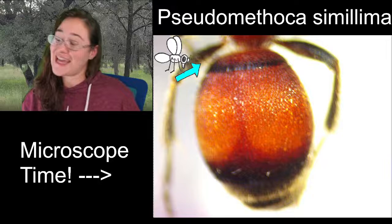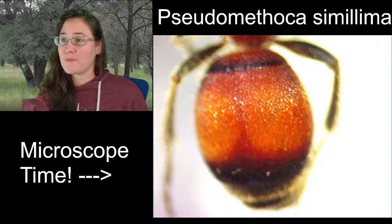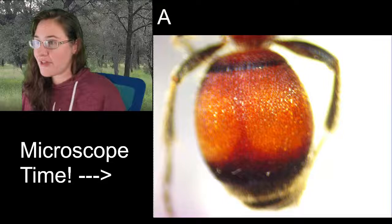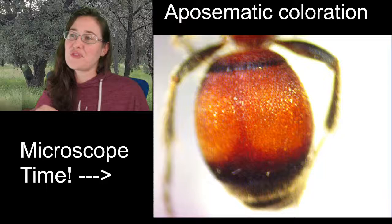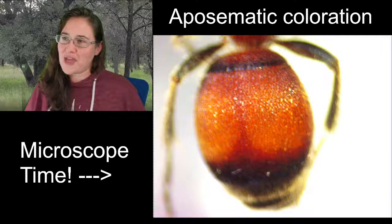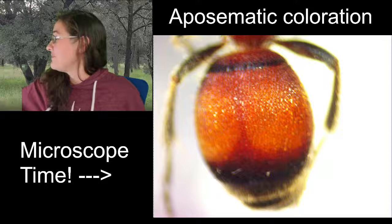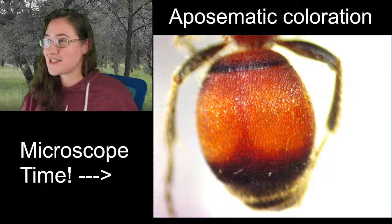Velvet ants like her are super bright red when alive — the bright red is a warning sign. We call it aposematic coloration. Aposematic coloration means warning colors — bright red, bright orange, bright yellow — 'I'm venomous, I hurt, don't bite me.' This velvet ant in particular has a giant stinger and will hurt you, so that's what the aposematic coloration is telling us.